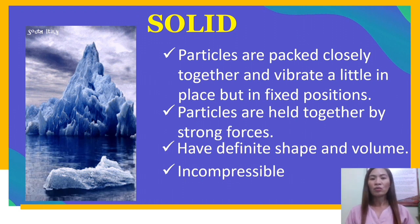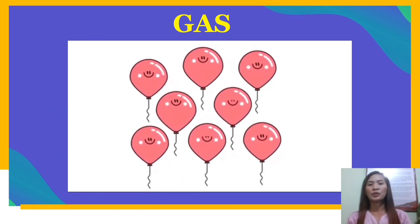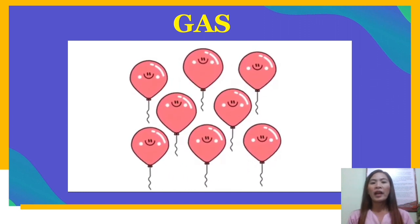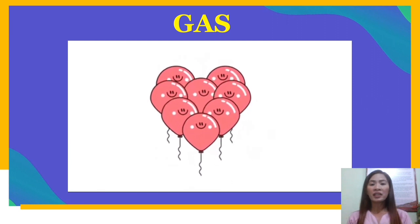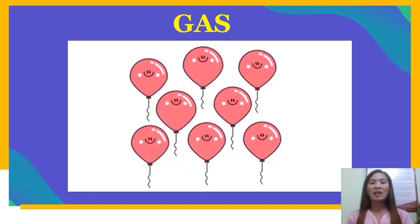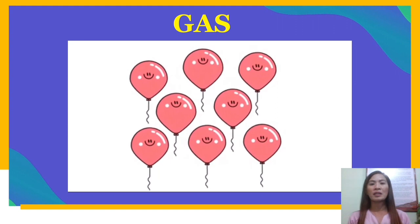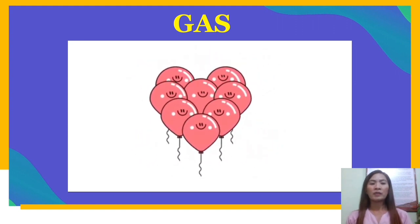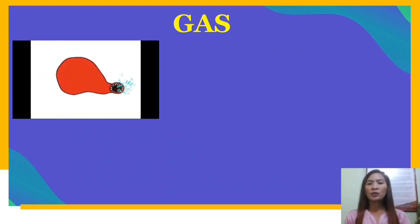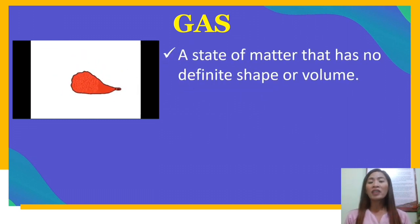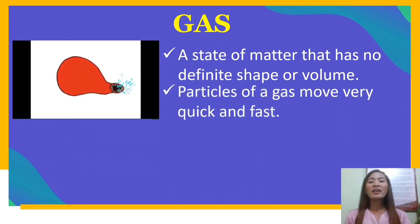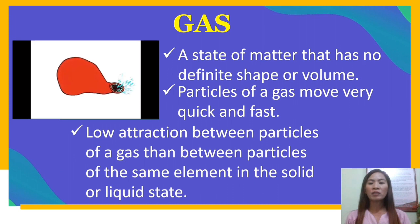Why does a solid behave differently from a liquid or a gas? This can be answered using the concept of the molecular structure of solids, liquids, and gases — it is just like your behavior inside the classroom. During discussion, you sit close together with your seatmates. The particles of air inside a balloon are in constant motion and far apart from each other — they are considered a gas since their particles can move to any space. When you inflate or deflate a balloon, its shape changes because air is a gas. Gas is a state of matter that has no definite shape and volume. The particles of a gas move very quickly, so they can break away from one another. There is low attraction between particles of a gas compared to the solid or liquid state.